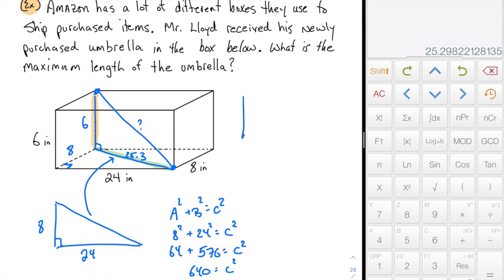If I focus on that interior triangle only, here's what I have. I have a right triangle, this side is 6, this is 25.3. We've estimated it at 25.3. And this missing side is what I'm ultimately looking for, the length of the umbrella.